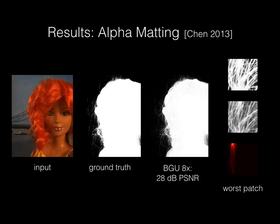Finally, we see a more serious failure with image matting. The result looks okay when zoomed out, but if you look closely, you can see that we can't represent the hard edges where alpha goes from 0 to 1. The local transformation is clearly not a curve—the same input intensity maps to an entire range of output alphas.